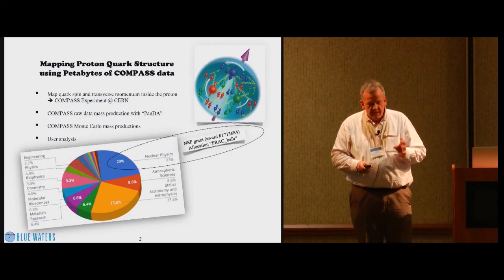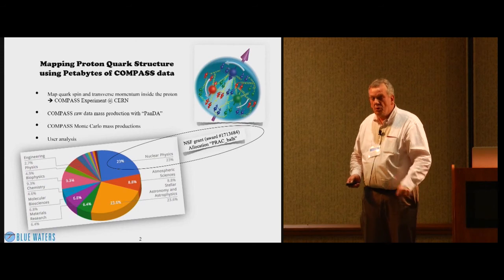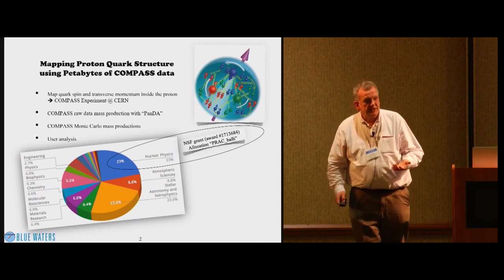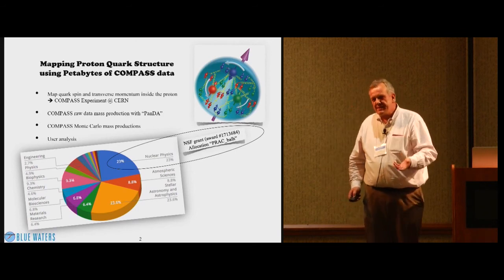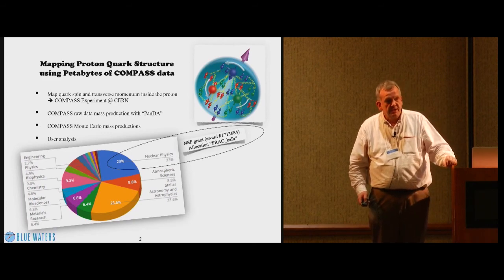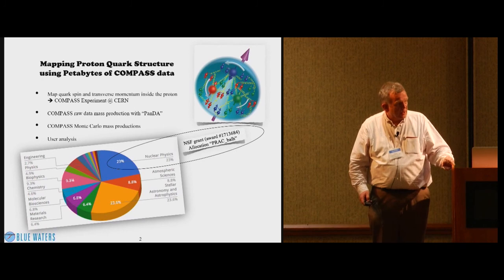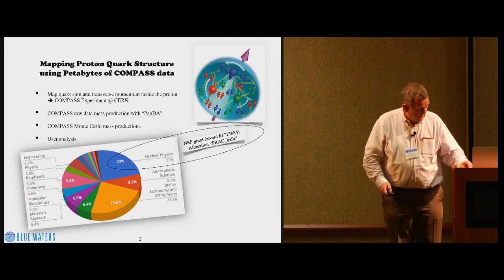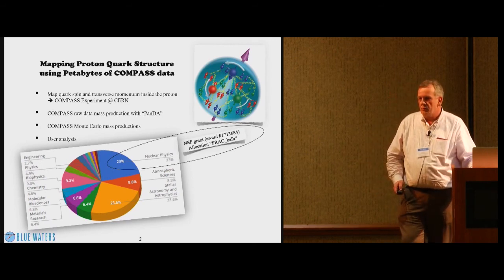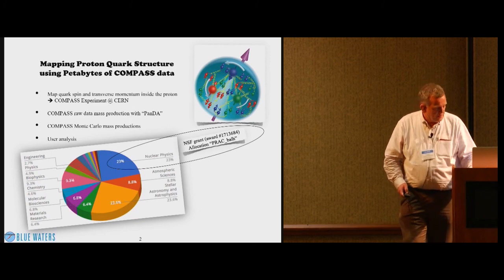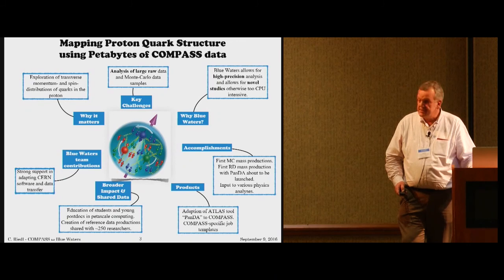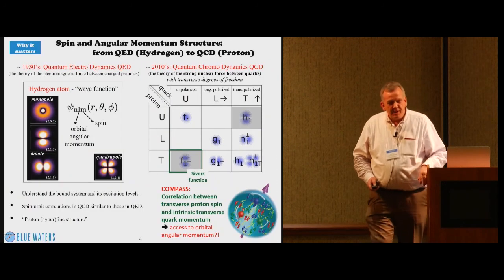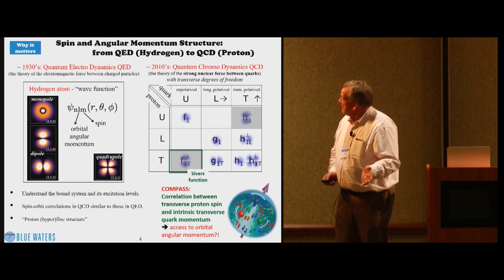I will first give you an introduction of the physics of proton spin structure, proton structure, and then describe the experimental challenge. This is an experiment that takes data 24-7 for 220 days each year for four years. There's just an enormous amount of data that needs to be analyzed, and Blue Waters provides the resources needed to carry out data production, Monte Carlo data production, and user analysis.